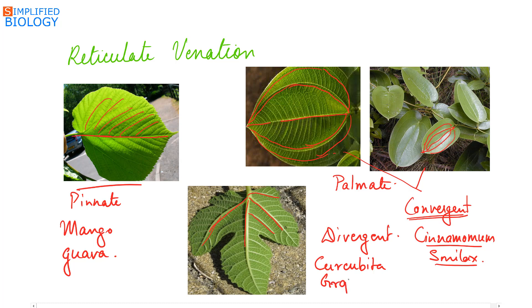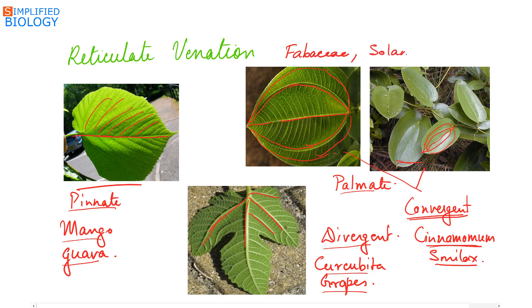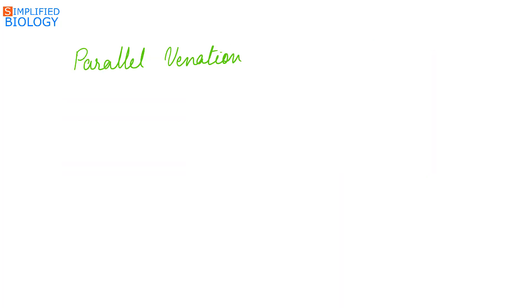Reticulate venation can be seen in mango and guava. Reticulate palmate convergent is seen in cinnamon and Smilax. Reticulate palmate divergent is seen in Cucurbita and grapes. Reticulate venation is seen in family Fabaceae and Solanaceae.